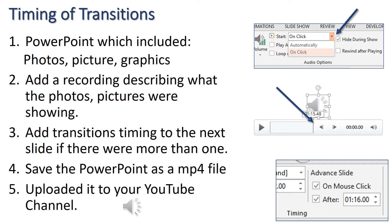I also needed to indicate the transition between this slide and the next slide if there was more than one slide in the video. The transition needed to happen after the recording was done. To do that, the first thing I needed to do was click on the recording icon if it wasn't already selected, and then I moved my mouse to the end of the box.